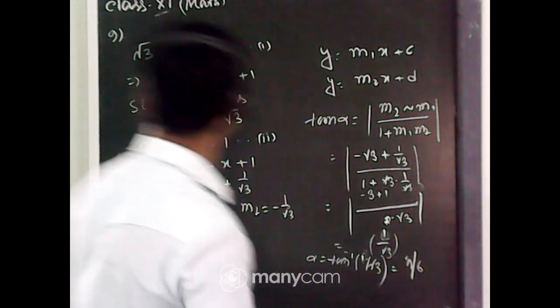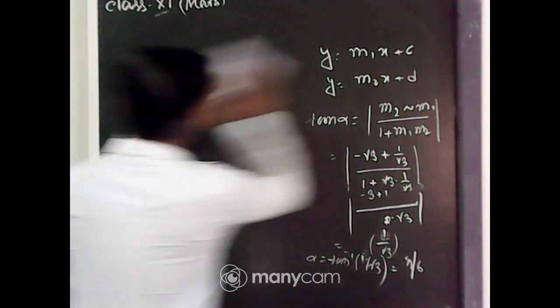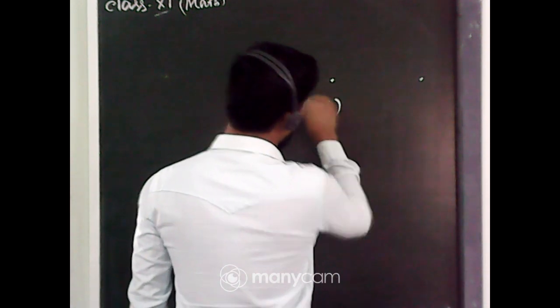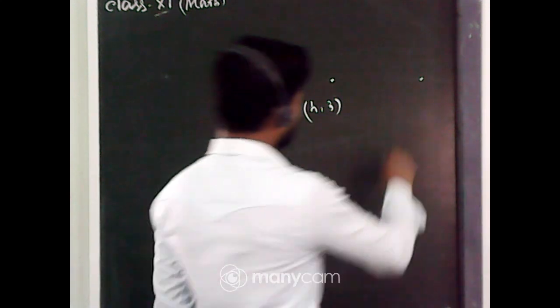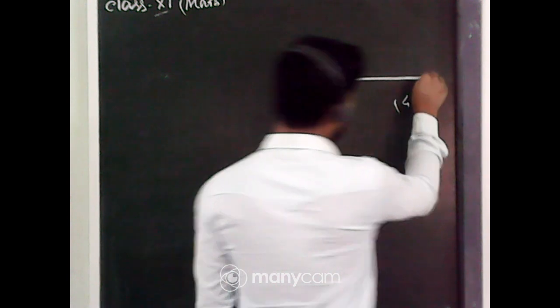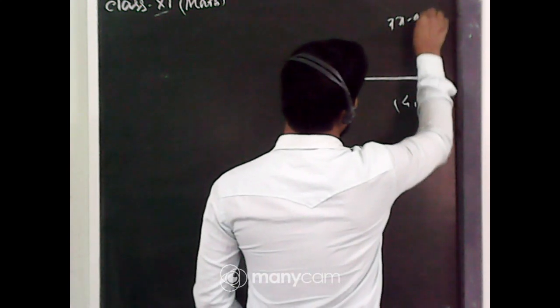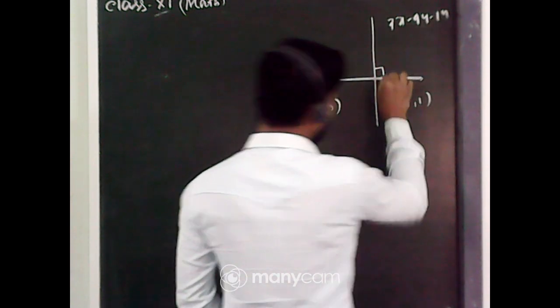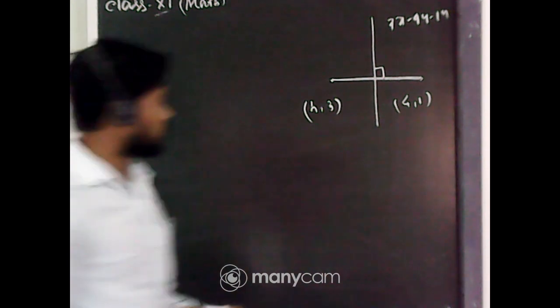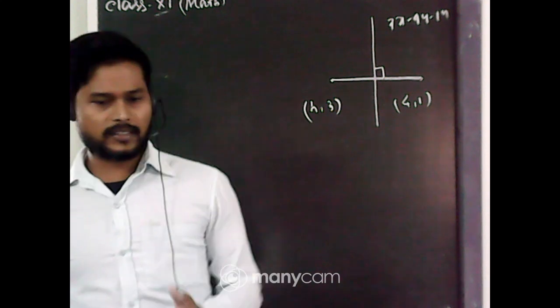Next is question number ten. A line through the points (h, 3) and (4, 1) intersects the line 7x - 9y - 19 = 0 at right angle. Find the value of h. Since the lines intersect at right angle, the angle between them is 90 degrees.